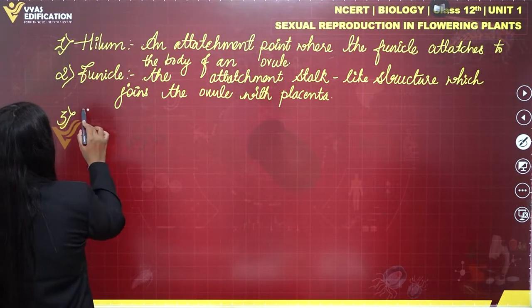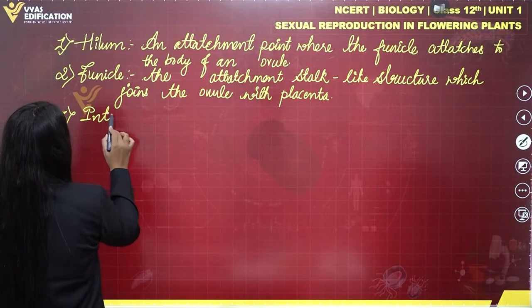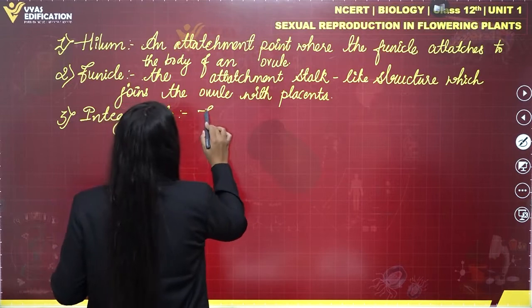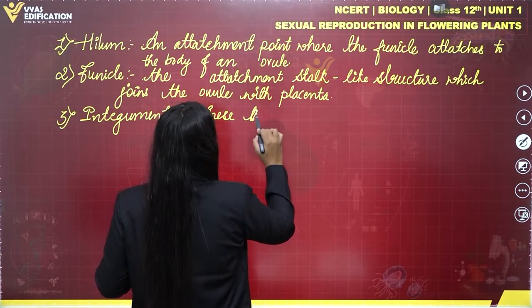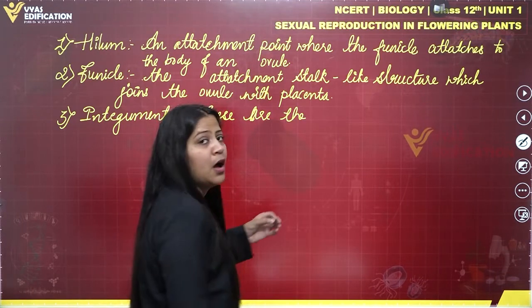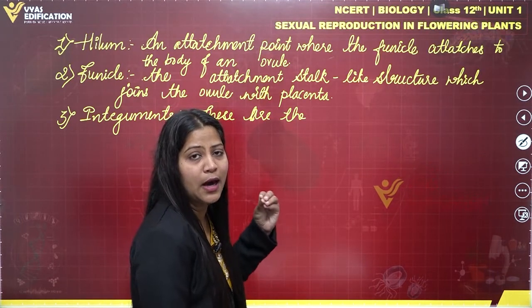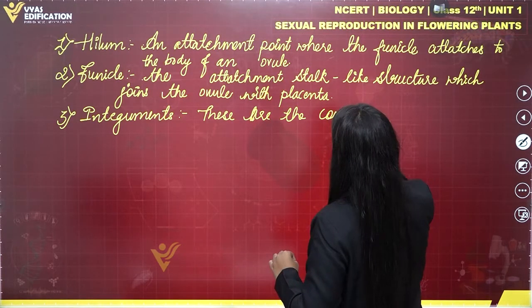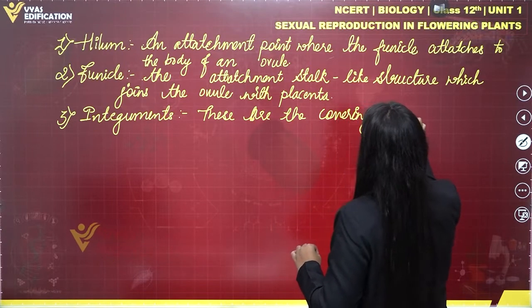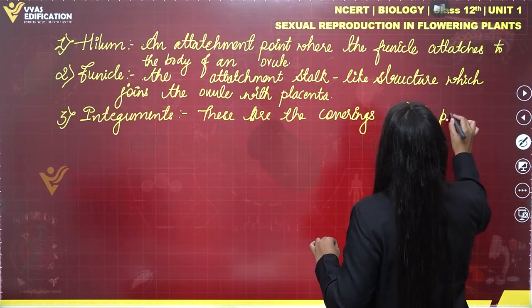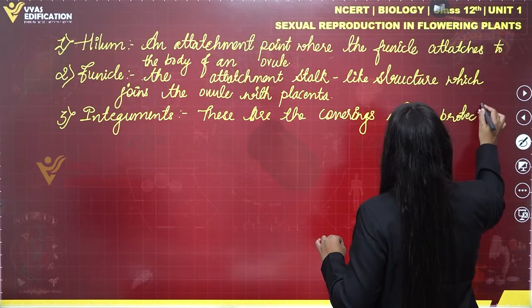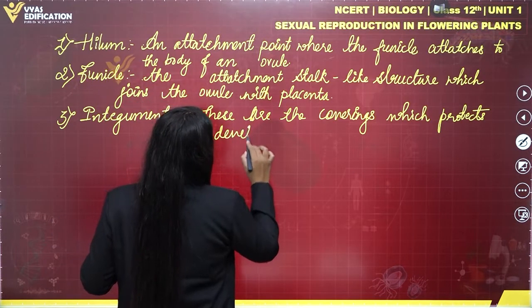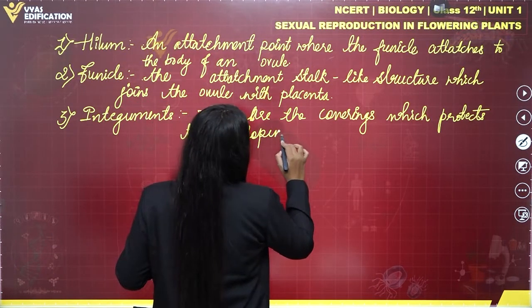The third part is integuments. What are integuments? These are the coverings which protect the developing embryo.